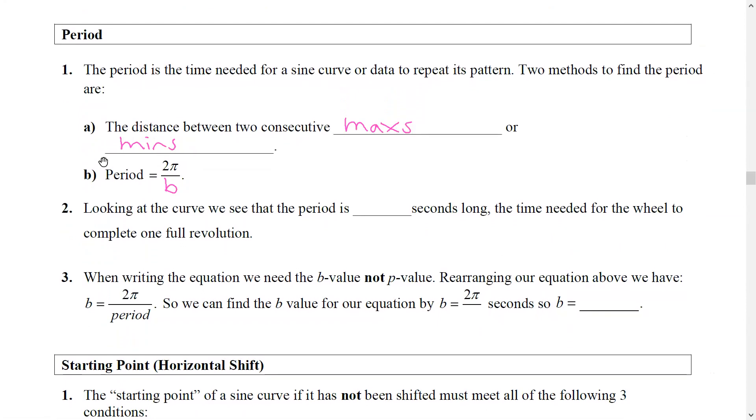Now if I need the b value when I'm writing my equation, I rearrange my formula. So I would go two pi over 120, or b over 1 - or sorry, b over 60 - and they may ask us to round that, depends on the question.